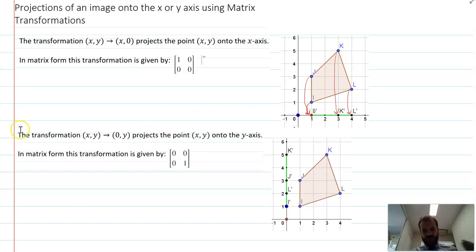And of course, we can go the other way. The transformation (x,y) to (0,y) projects the point (x,y) onto the Y axis. We use this matrix to do it. Over to here, this one goes to there, that one goes to there, and that one goes to there.